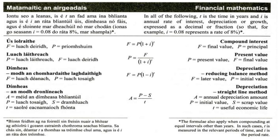Now we're going to look at a second formula: the present value formula. This is just a rearranged version of the compound interest formula — P equals F divided by one plus i to the power of t. If you want the future value you multiply; if you want to work backwards and get the present value you divide. So you get a nice summary: for the future, multiply; for the past, divide.